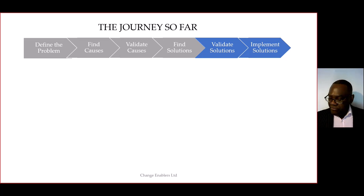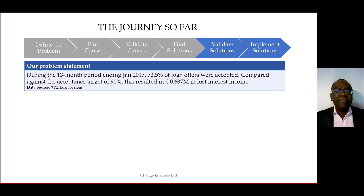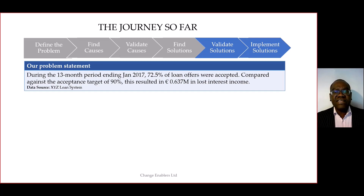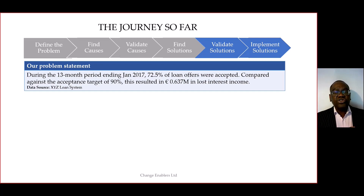When we revisit the problem statement, we're using a real life data set from the Business Process Intelligence 17 Challenge, which captures the loan process for a Dutch financial service institution. And throughout this series, we've used that data set to illustrate the causal inference techniques we've been discussing.